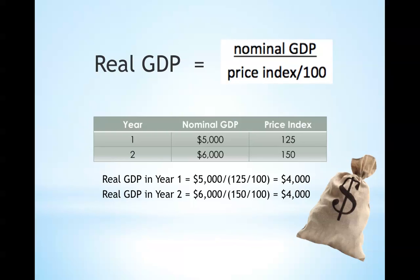As an example, if in year one the nominal GDP is $5,000 and the price index is 125, and in year two the nominal GDP is $6,000 while the price index is 150, then the real GDP in year one would be $4,000, and the real GDP in year two would also be $4,000. Initially they seem to have different GDPs, but the real GDP puts in perspective that they are actually the same.